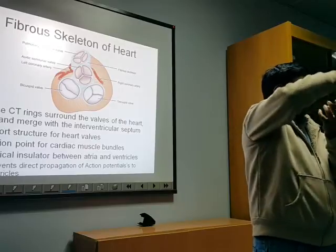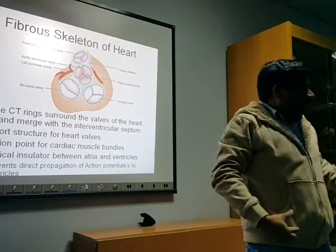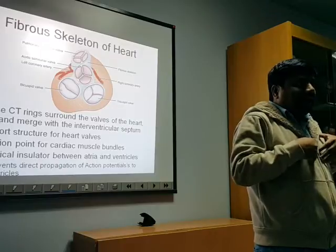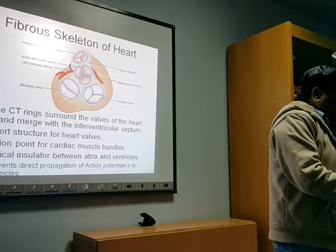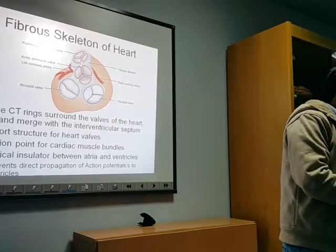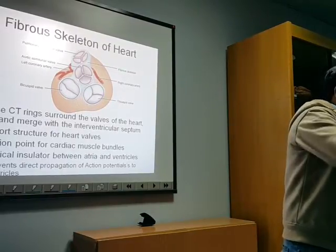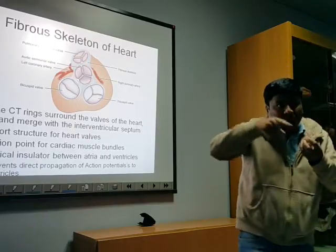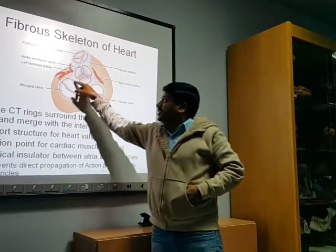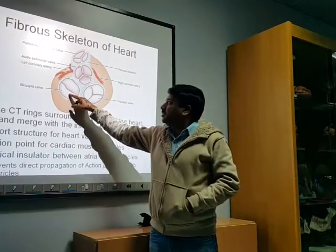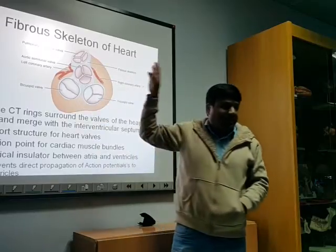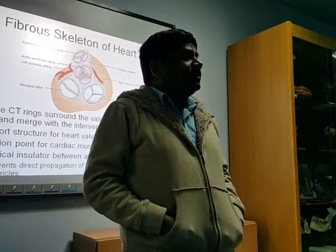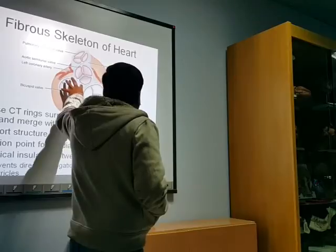Just like the skeleton of the body has bones to which muscles are attached, similarly the cardiac skeleton is a separate structure made up of fibrous connective tissue. The cardiac muscle needs some skeleton to which it should be attached. So the fibrous skeleton of the heart is present around the valves, to which you have the attachment of the cusps of the valves as well as the cardiac muscles.